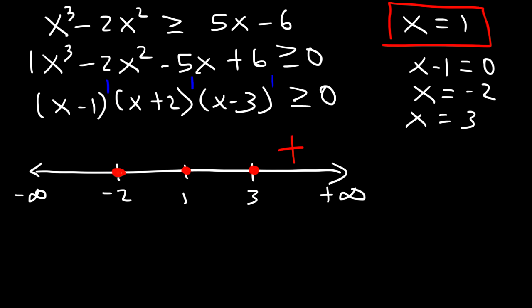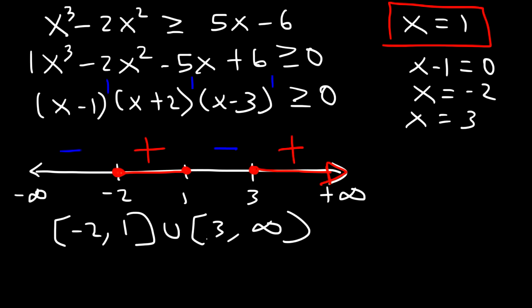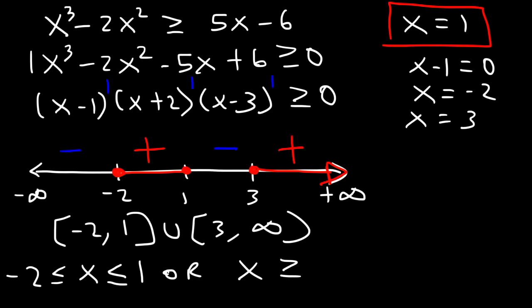So the sign just alternates. We only want the regions where it's positive: between negative 2 and 1, and between 3 and infinity. In interval notation the answer is from negative 2 to 1, union 3 to infinity. As an inequality: negative 2 is less than or equal to x is less than or equal to 1, or x is greater than or equal to 3. Now you know how to solve a polynomial inequality using number lines and interval notation.